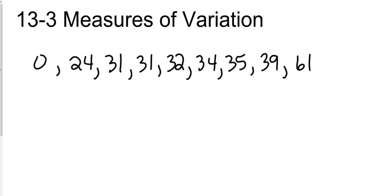Okay guys, back at the screencast. We're looking at 13-3 measures of variation and we are still looking at different lists of information and determining different ways we can write them.